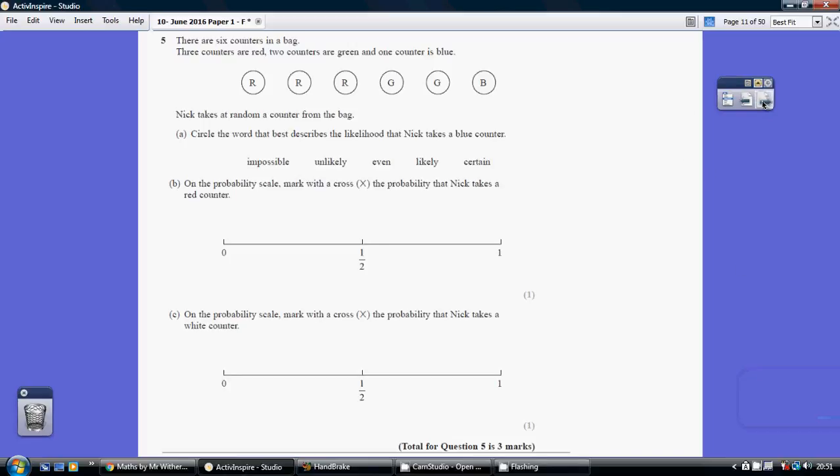Question 5. Nick takes a random counter from the bag. Circle the word that best describes the likelihood of taking a blue counter.